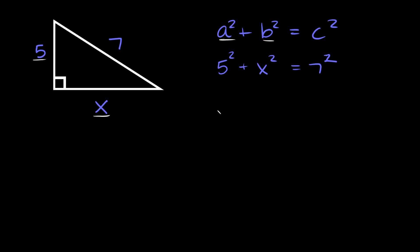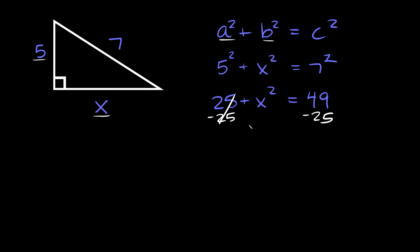That exponent is a 2. So 5 squared is equal to 25, plus x squared, is equal to 7 squared which is 49. To solve for x we can subtract 25 from both sides, and then we get x squared is equal to 24. To get rid of the exponent we take the square root of both sides, so x is equal to the square root of 24, which is not a perfect square — but there are different ways we can break this up.